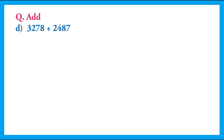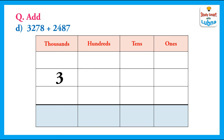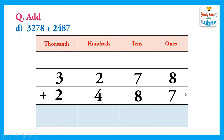One more example. Now we have to add 3278 and 2487. We will write these 4-digit numbers below their place values and put the addition symbol. We will add the ones. In the ones column we have 8 and 7. 8 plus 7 equals 15. So we regroup the ones and write 5 in the ones column and carry 1 to the tens column.